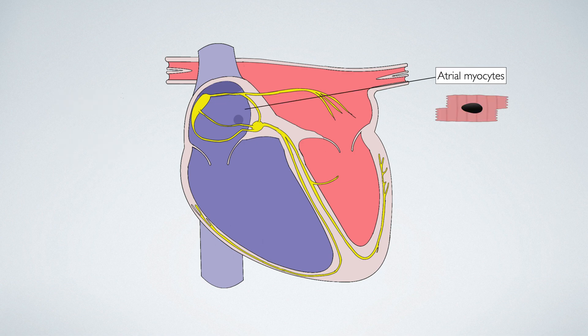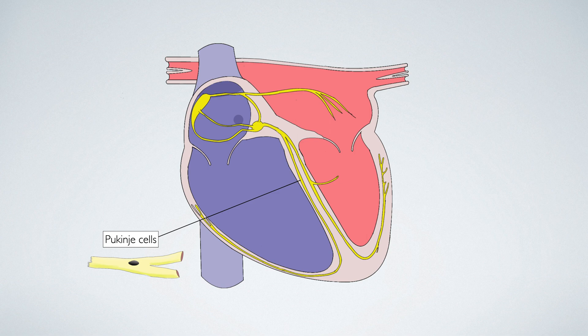Atrial myocytes are striated cells that contain actin and myosin. They conduct electrical impulses and contract the atria. Purkinje cells are located in the bundle of Hiss and the left and right bundle branches. These cells are highly specialised myocytes which do not contain contractile units. Instead, these cells are packed with mitochondria and specialist connections called gap junctions. They rapidly conduct electrical impulses at blistering speeds to the ventricles.